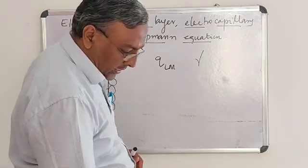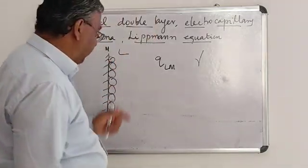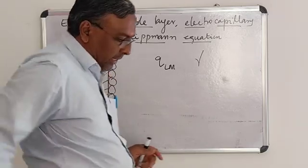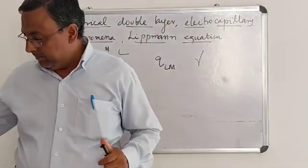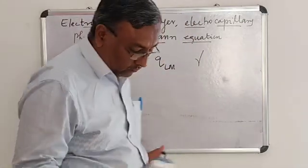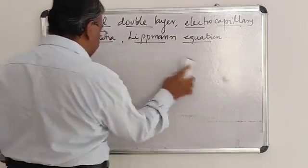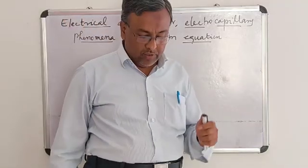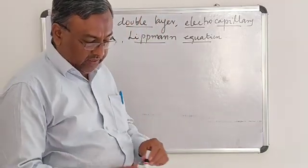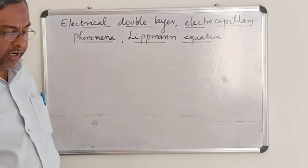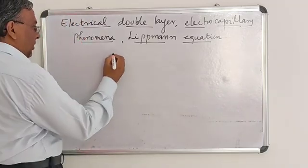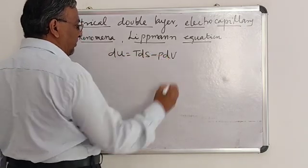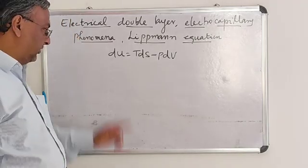In this topic, we are going to study the electro-capillary phenomena using the Lippmann equation. We are taking the interesting system of electrode-electrolyte interface. Now, if the system is a closed one, according to thermodynamics, dU is equal to TdS minus PdV. This is for the closed system.